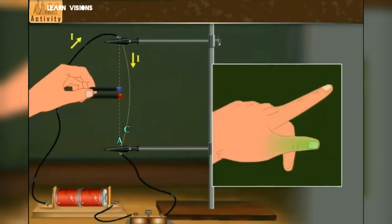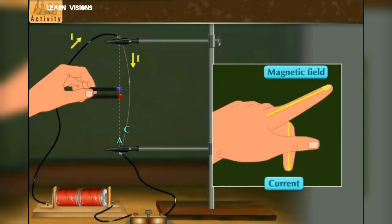The forefinger, middle finger and thumb should be perpendicular to one another. The forefinger shows the magnetic field of the magnet. Middle finger shows the direction of current and the thumb shows the direction of force acting on the conductor.